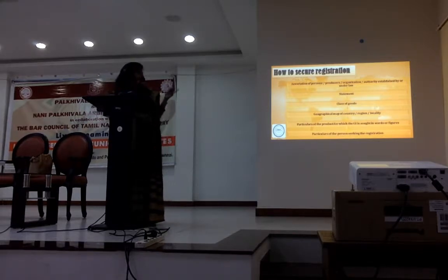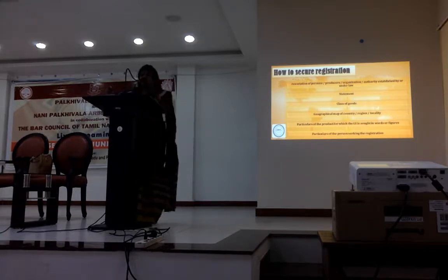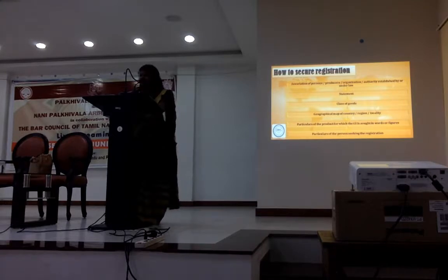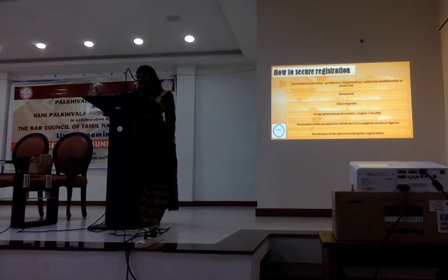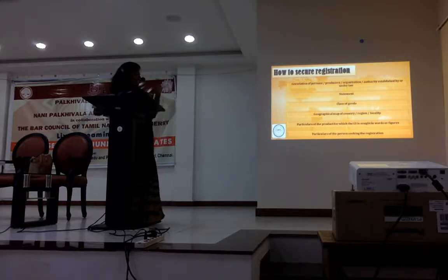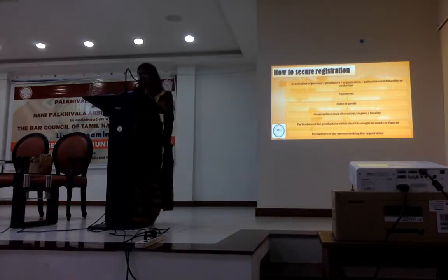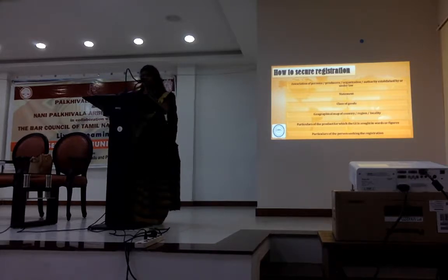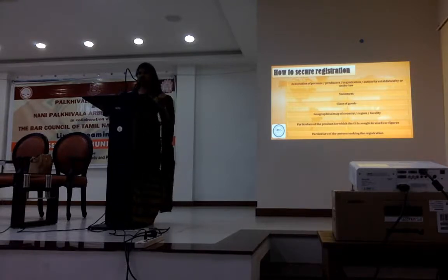You need a statement, you need to mention the class of goods, and you need to put the geographical map in your GI application mentioning the latitude and longitude. For instance, for the Tirupati Laddu, they got the latitude and longitude of that particular kitchen. However, it is not an association of persons — it is a single person — whereas the requirement is that it should be an association of persons. You can also provide particulars of the person seeking registration.